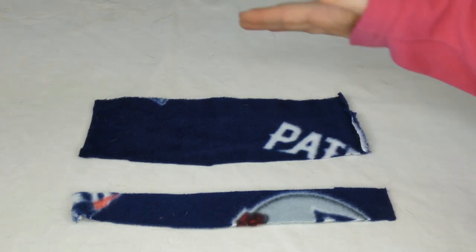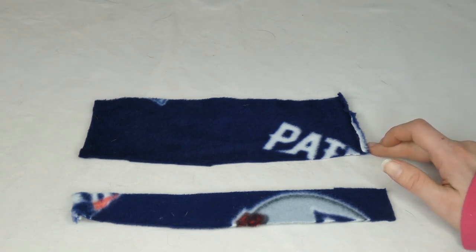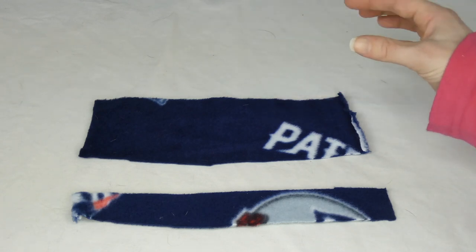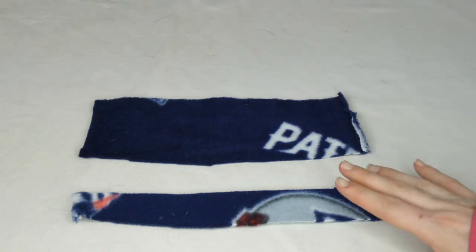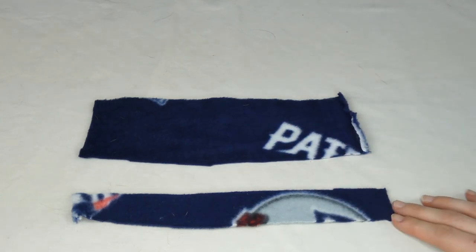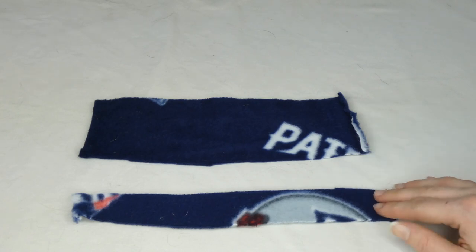So my fabric here is about 10 inches long by 3 inches wide, and that's going to make my bowtie about 5 inches long by about an inch and a half wide. And then you want a piece that is the same length, but it's only about a third of the width. So this is 10 inches long again, but it's only 1 inch wide.